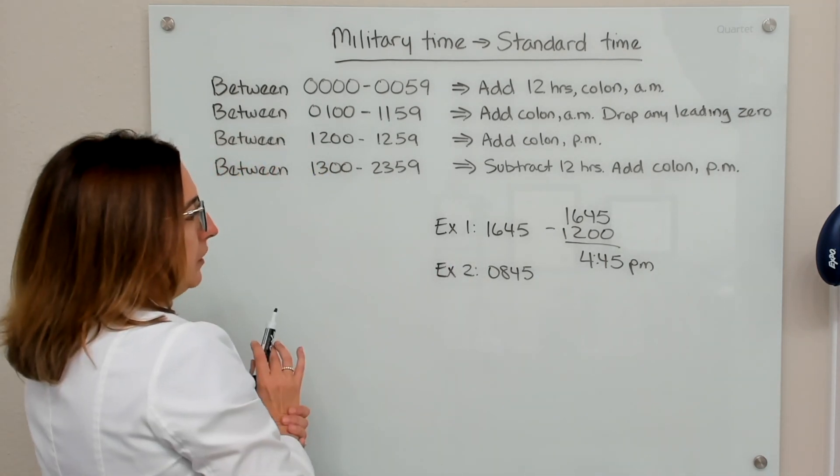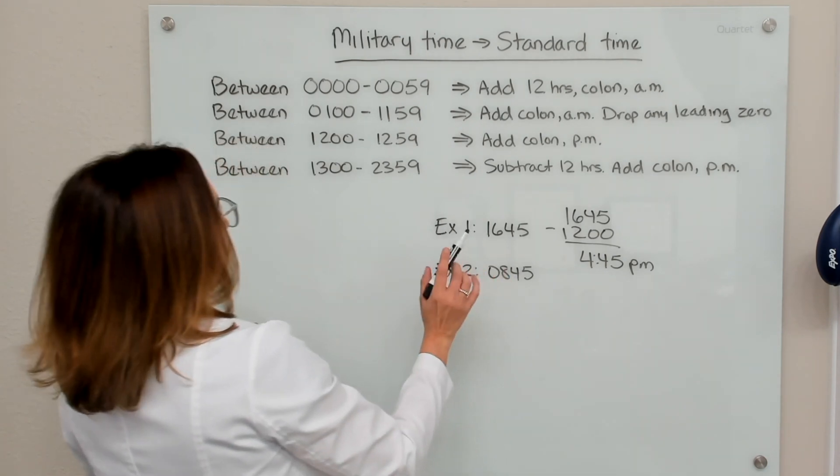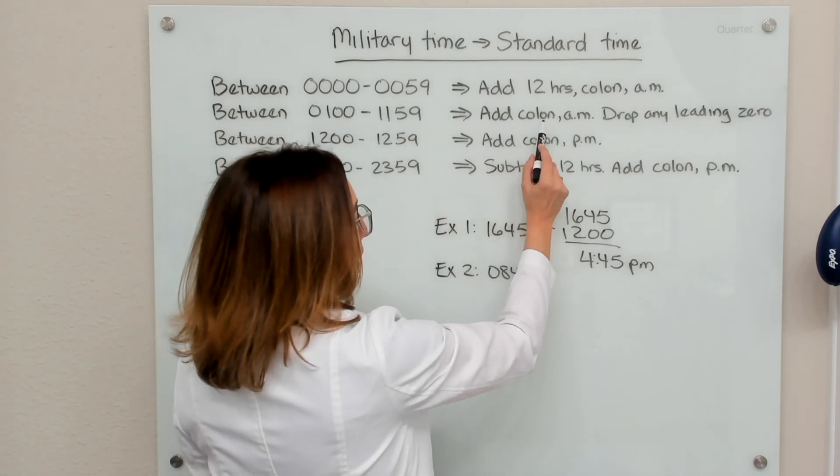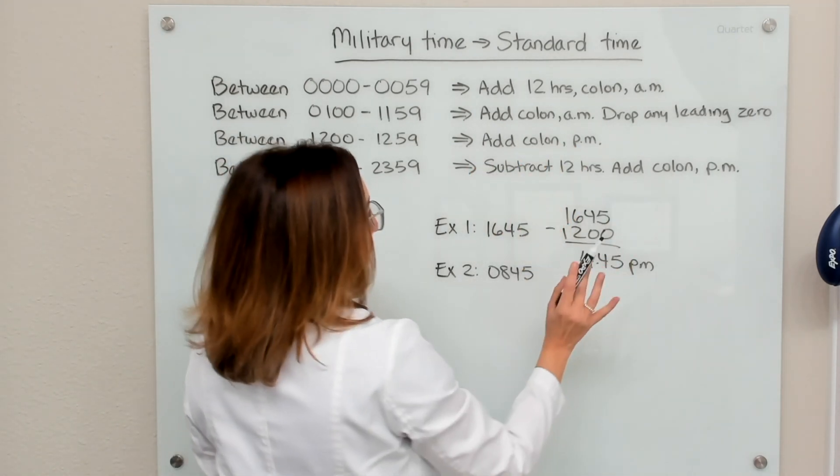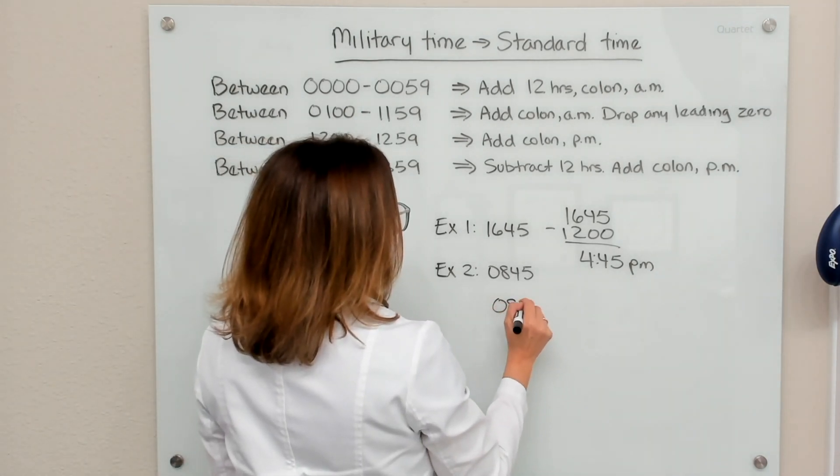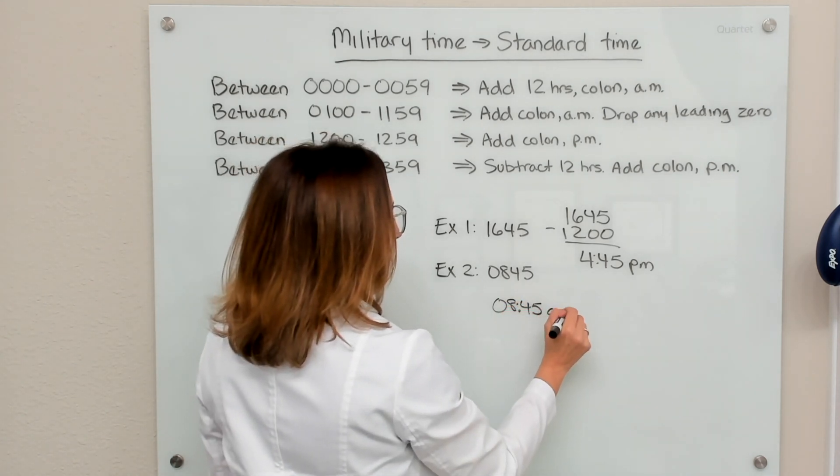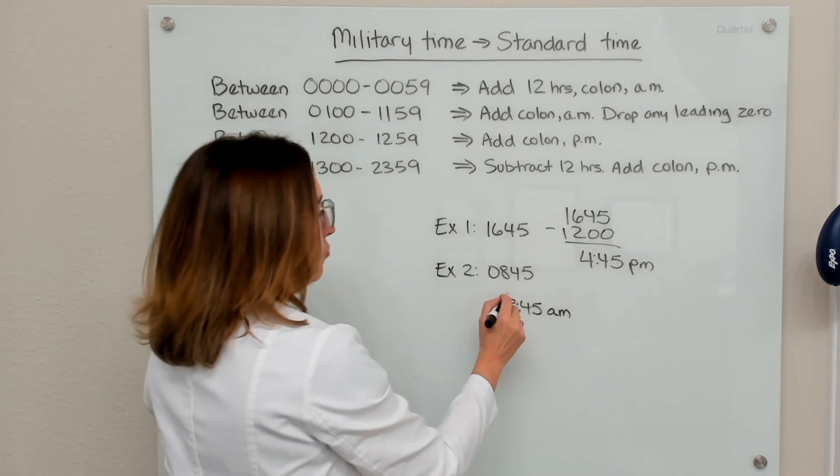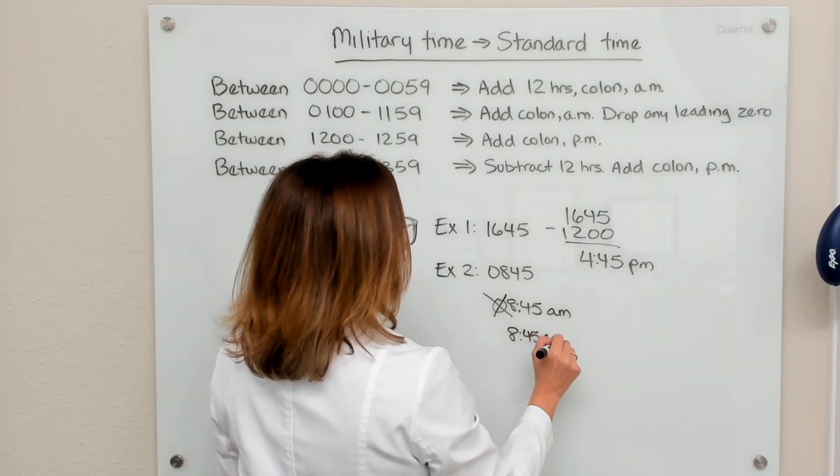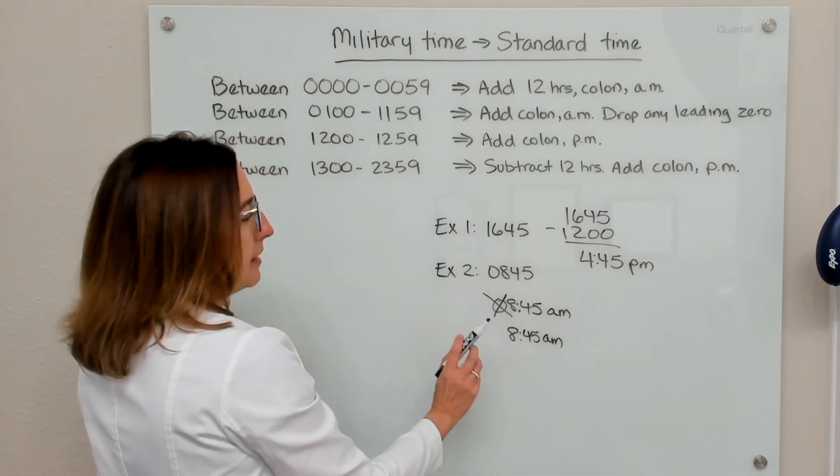What about our second example? Here we have a military time of 0845, which falls within this range here. So we need to add a colon and an a.m. and then drop any leading zero. So we're going to take our 0845, we're going to add a colon, we're going to add an a.m., and then we need to drop this leading zero. So this becomes 8:45 a.m. So 0845 military time is 8:45 a.m. standard time.